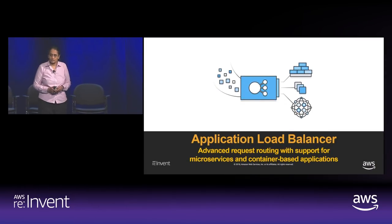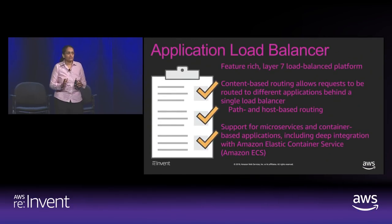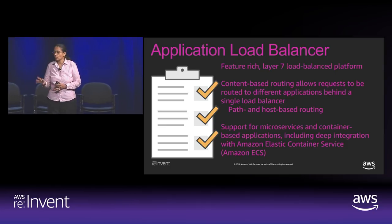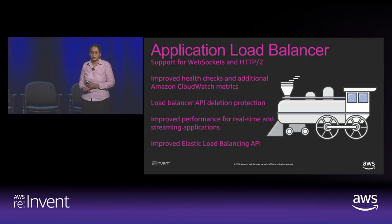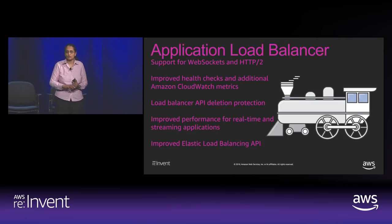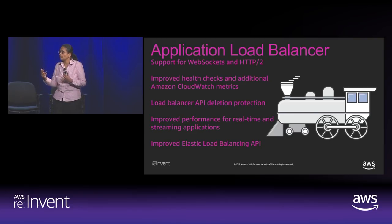The Application Load Balancer is a feature-rich layer 7 load balancer that we introduced two years ago. High-level features include content-based routing — path-based and hostname-based routing — well-suited for container applications. We support WebSockets for full-duplex communications, whether it's Twitter feeds or other cases where clients need bidirectional communication. HTTP/2 support makes your page loads much faster. We've also improved health checks, CloudWatch metrics, and implemented API delete protection.